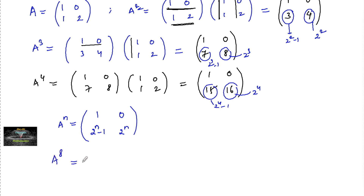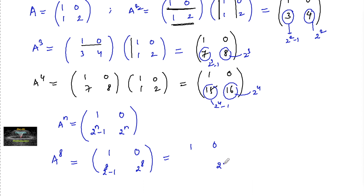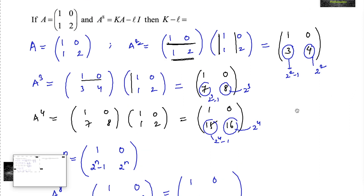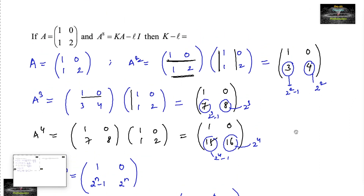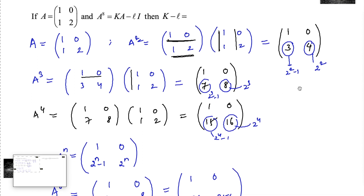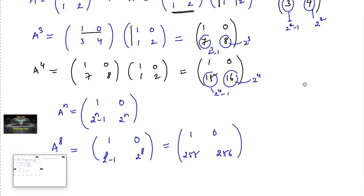So A to the power of 8 is equal to [[1, 0],[2⁸−1, 2⁸]], which equals [[1, 0],[255, 256]]. This is our LHS. The RHS is kA minus lI.